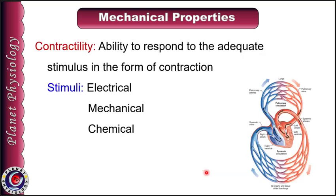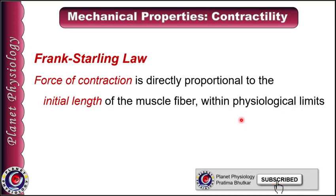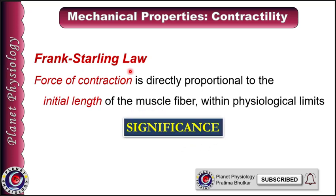Let us begin with contractility. It is defined as the ability of the tissue to respond to an adequate stimulus in the form of contraction. Normally cardiac muscle responds to electrical stimulus from the pacemaker, but it can also respond to mechanical or chemical stimuli. Due to its contractility, the heart can pump blood in circulation, which is essential for the working of all the tissues. The force of contraction is directly proportional to the initial length of the muscle fibre within physiological limits. This is known as Frank-Starling's law, and due to this, cardiac output can be altered based on the end-diastolic volume — the volume of blood in the ventricle at the end of ventricular diastole — which decides the length of cardiac muscle fibre and hence the stroke volume and cardiac output.